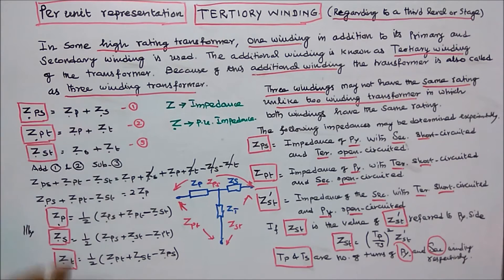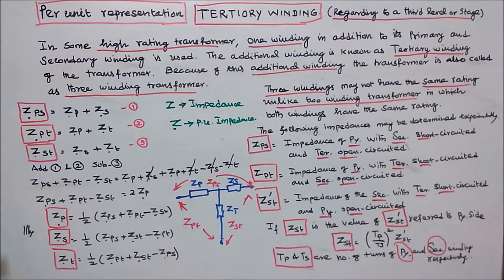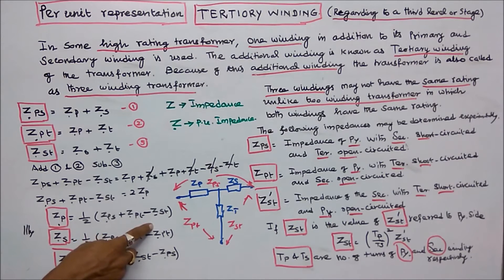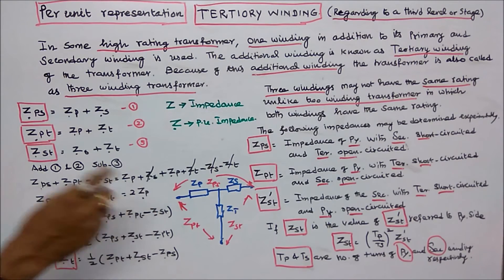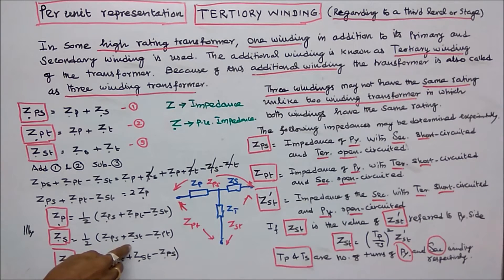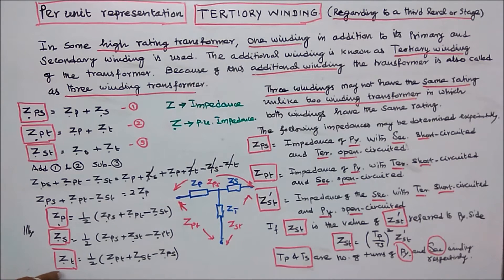We have three equations; by solving these three equations we can find the per unit impedance of primary, per unit impedance of secondary, and per unit impedance of tertiary winding. Per unit impedance of primary equals (1/2)(Zps + Zpt − Zst). Similarly, per unit impedance of secondary equals (1/2)(Zps + Zst − Zpt). Per unit impedance of tertiary winding equals (1/2)(Zpt + Zst − Zps).